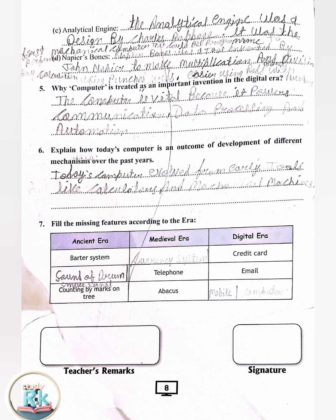7. Fill the missing features according to the era — Ancient era, Medieval era, Digital era. 1. Barter system, currency system, credit card. 2. Sound of drums and smoke signals, telephone, email. 3. Counting by marks on trees, abacus, mobile and computer.